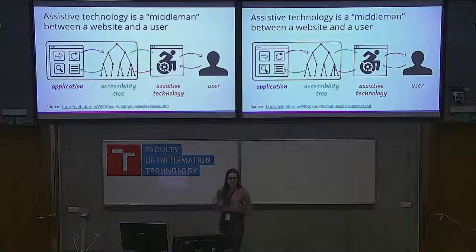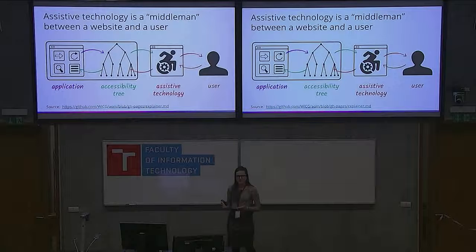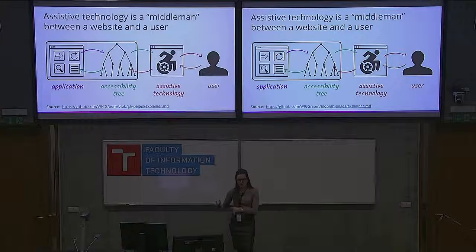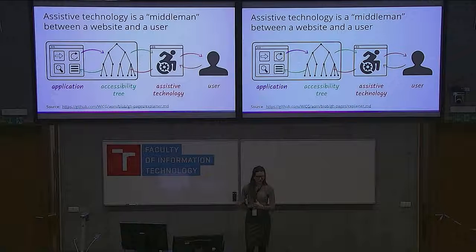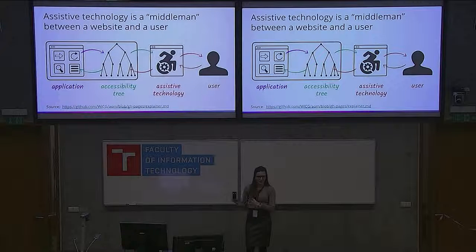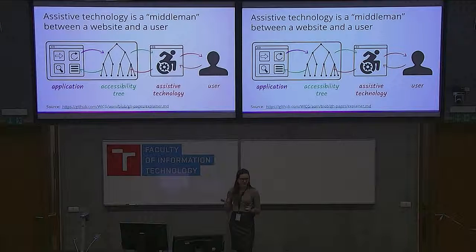How do assistive technologies work with websites? The web page is transpiled to the DOM tree, and at the same time it's transpiled to an accessibility tree. Assistive technologies like screen readers can consume information from the accessibility tree and translate it to the user in meaningful text. For example, if you use a UL element on your page — which is a list — assistive technology will know it's a list and say: 'This is a list of three items.'